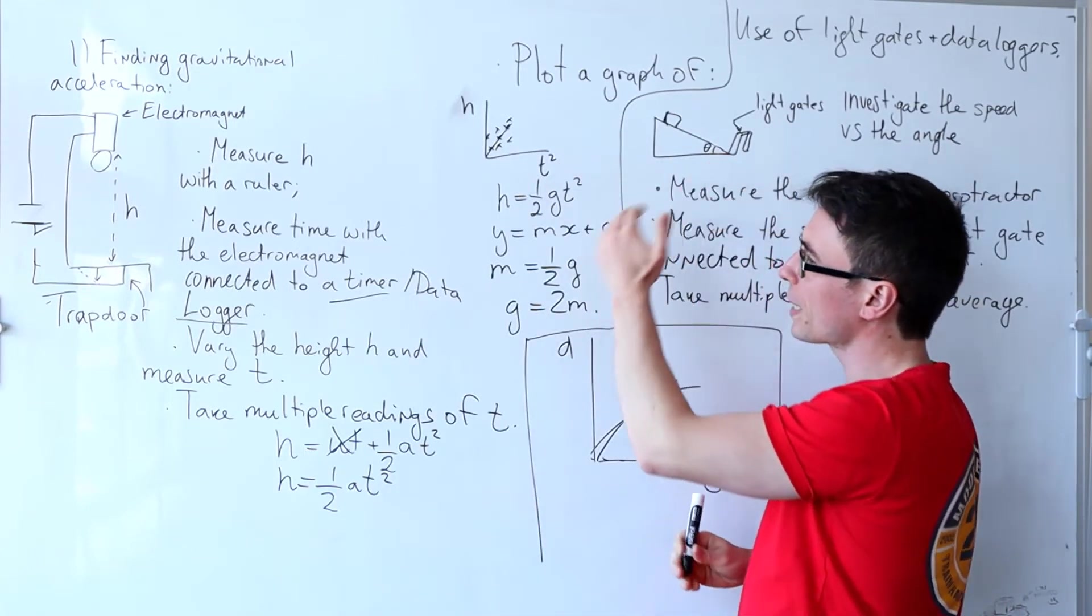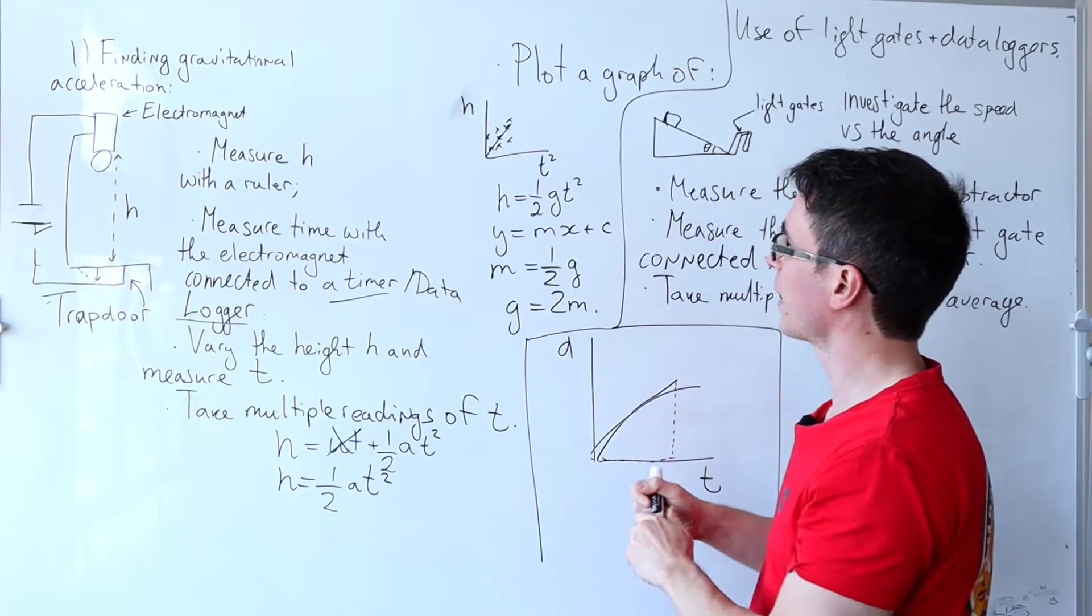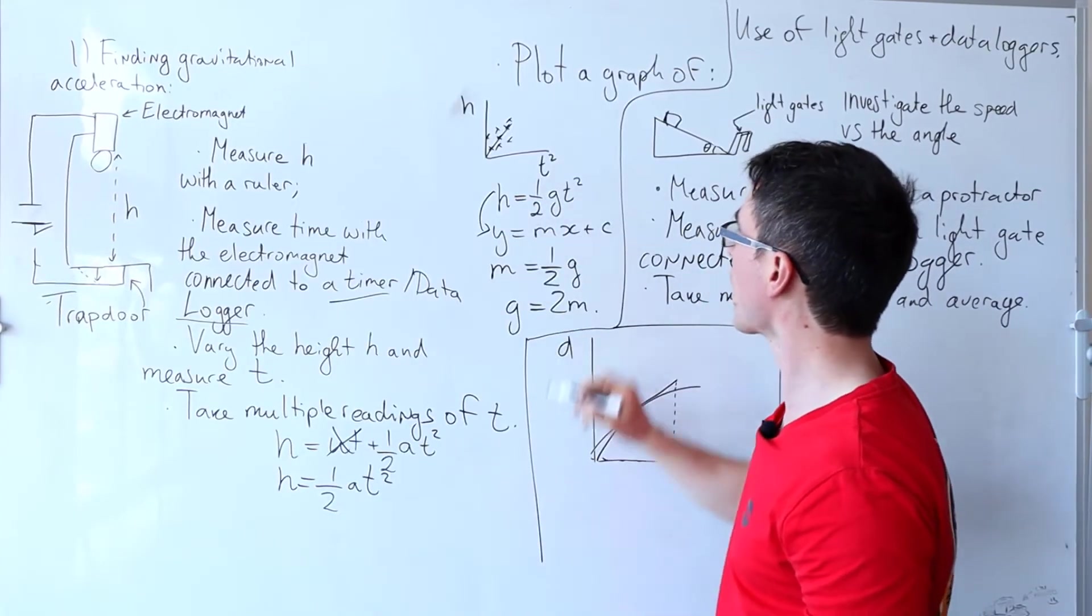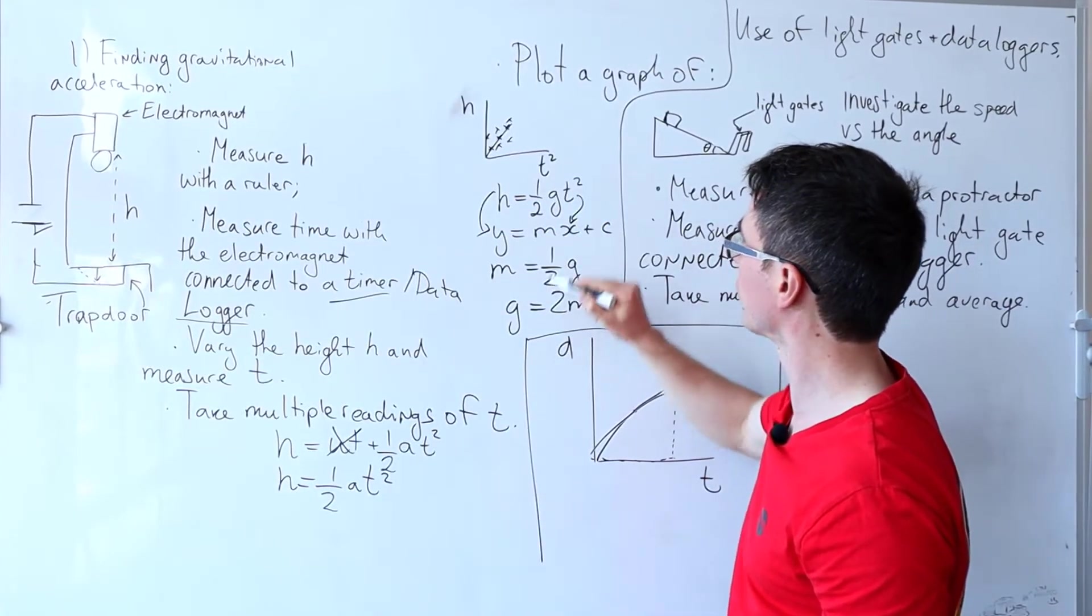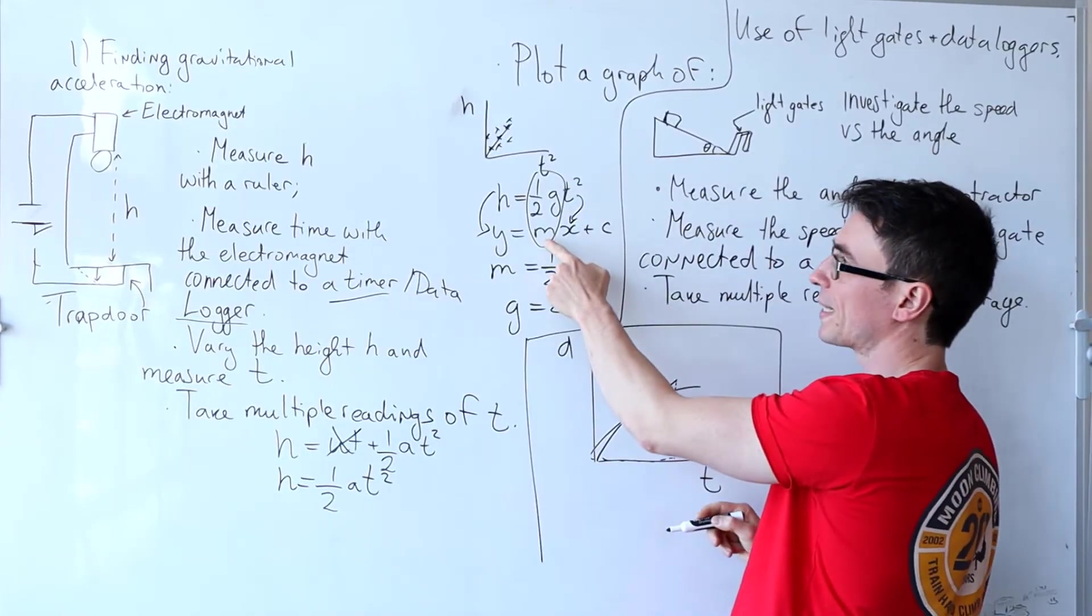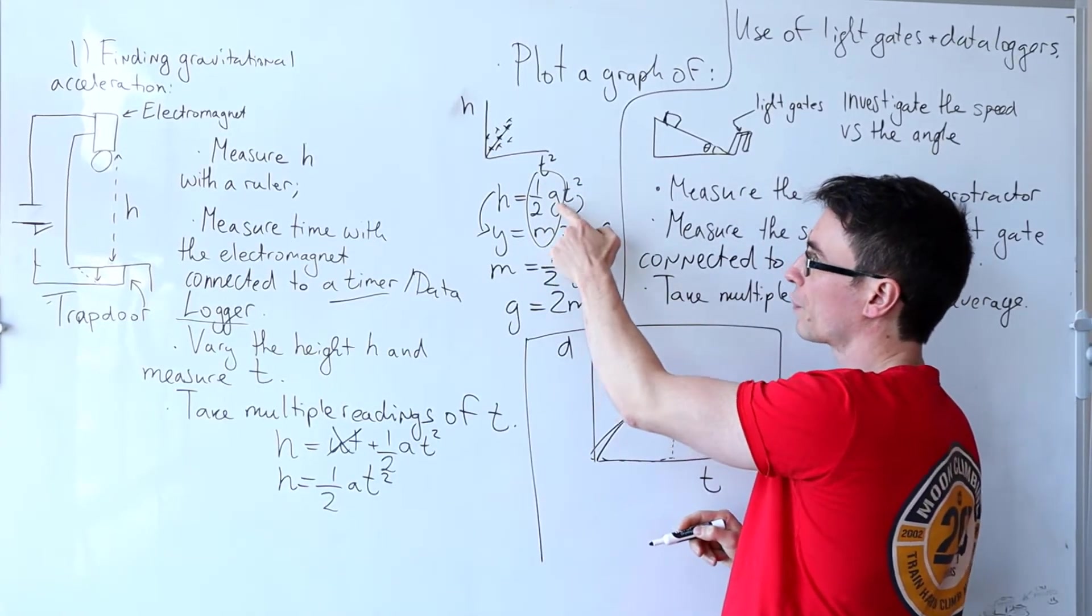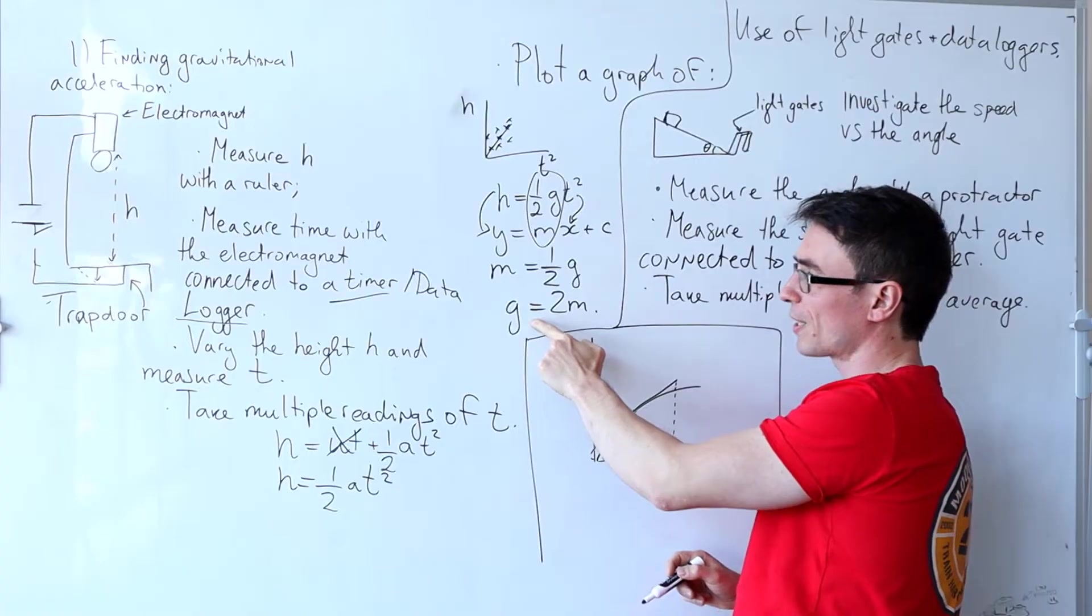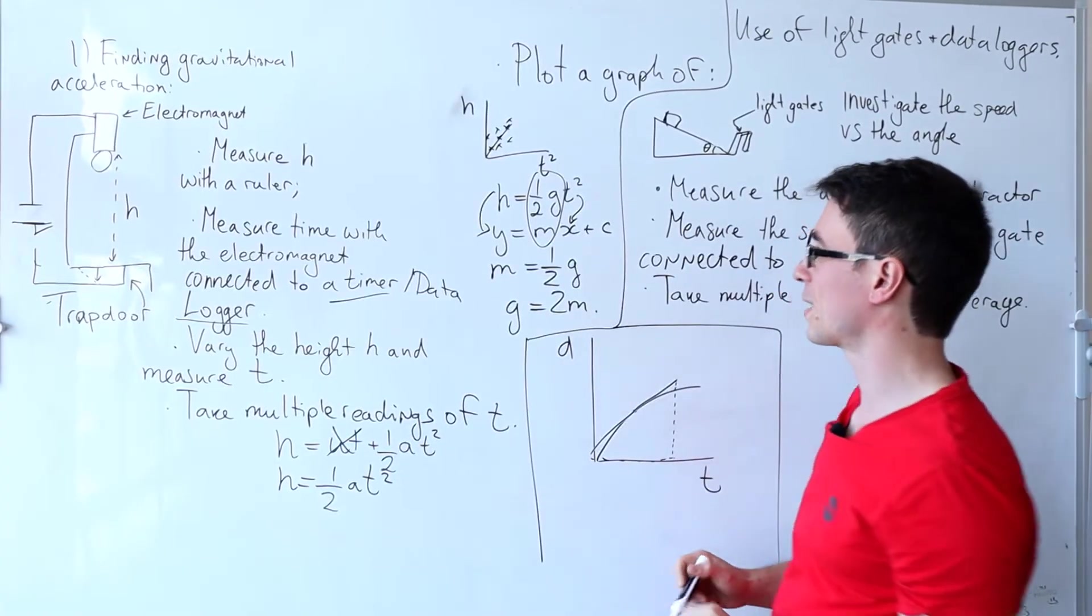Anyways we're going to draw the line of best fit and if H is on the Y axis, if T squared is on the X axis, what's left for our gradient M is half G. Rearranging we can find that G is equal to twice the gradient.